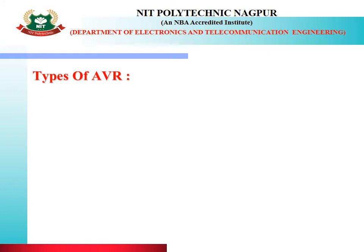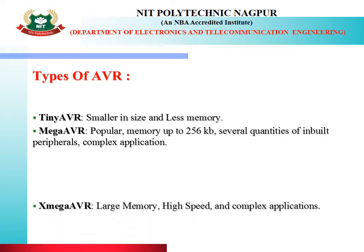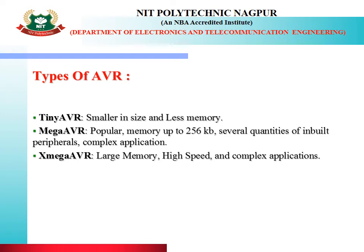Let's come towards the types of AVR. AVR has 3 different parts. One is Tiny AVR, which is smaller in size and has less memory. The second is Mega AVR, which is a popular AVR with memory up to 256 KB and several quantities of built-in peripheral filters for complex applications. The last is XMEGA AVR, which is having large memory, high speed, and complex applications. Normally, we use XMEGA AVR for industrial applications.